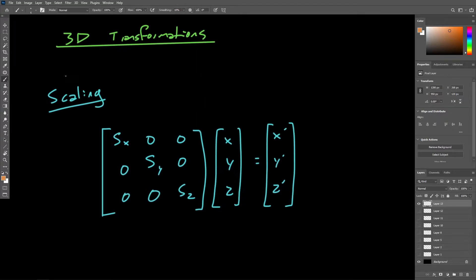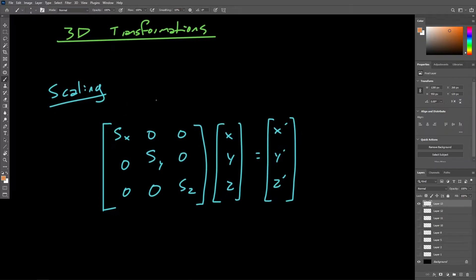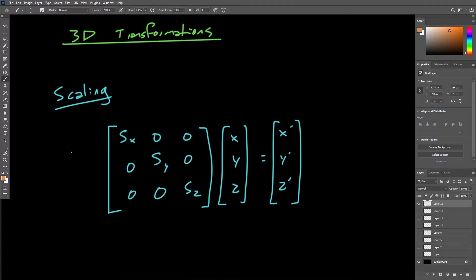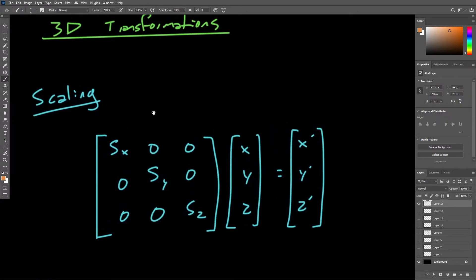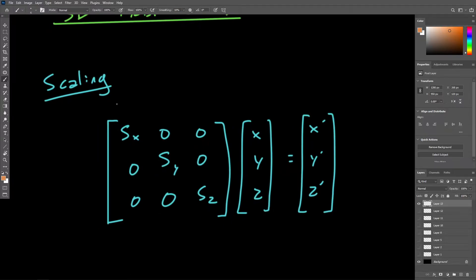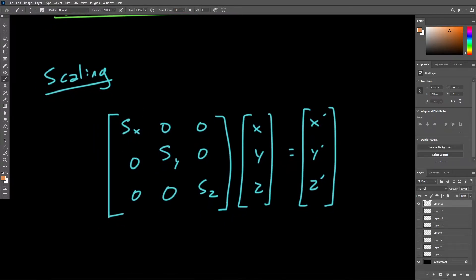First off, with scaling, we're going to find that a scaling transformation will always be represented with the following matrix. So what we have here is a three by three matrix with scaling factors defined along this diagonal. We can scale a certain amount in the x-axis, the y-axis, and the z-axis.